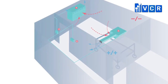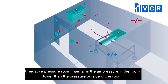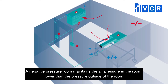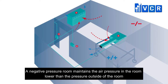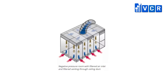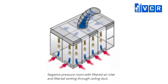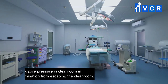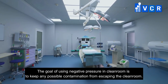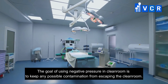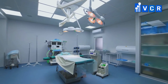A negative pressure room maintains the air pressure in the room lower than the pressure outside of the room. Generally, this condition is achieved by filtering air out of the room. In most situations, air enters through filters near the floor and is then sucked out through filters in the room ceiling. The goal of using negative pressure in a cleanroom is to keep any possible contamination from escaping the cleanroom.